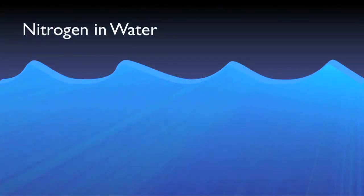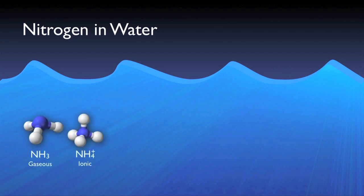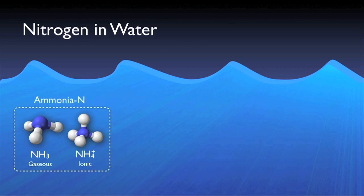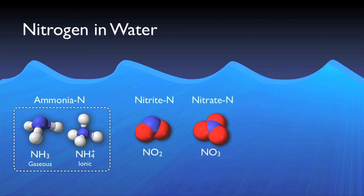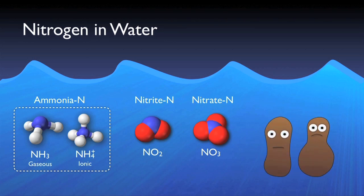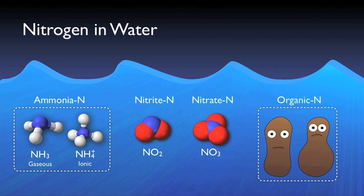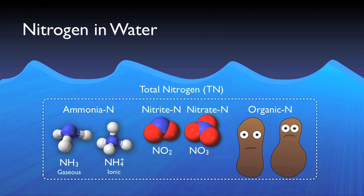Nitrogen is present in wastewater in various forms which have been lumped into separate general categories. Nitrogen in the form of ammonia is ammonia nitrogen. There is also nitrite nitrogen and nitrate nitrogen, which are usually formed during the actual biological processes at the wastewater treatment plant. In addition, nitrogen makes up a small percentage of cell mass of organisms in the system as well as other dissolved organic compounds. This category is referred to as organic nitrogen, of which a certain amount typically cannot be removed through the biological processes described in this video. Total nitrogen, as the name implies, is the sum of all types of nitrogen.